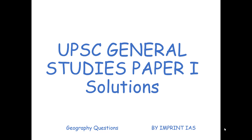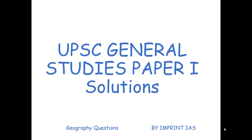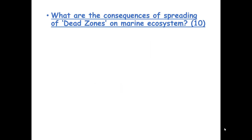Hello everyone, welcome to Imprint IAS. I am Varun Khallar and today we are going to look at geography questions from UPSC General Paper 1, 2018. So let's start with the question: what are the consequences of spreading dead zones on marine ecosystem?